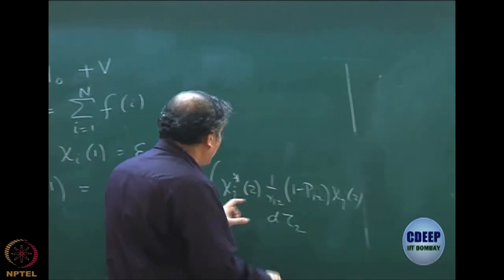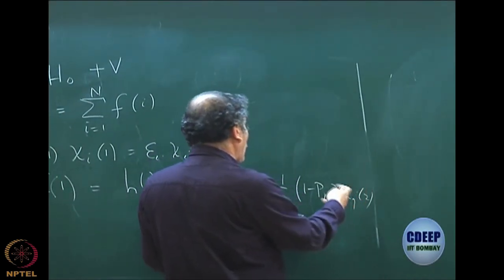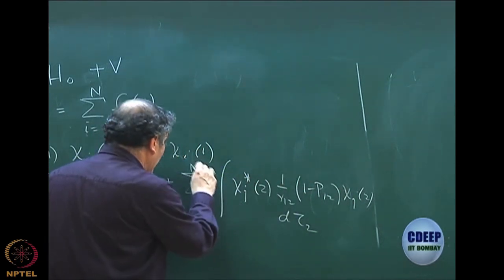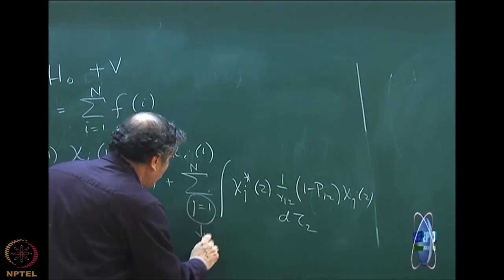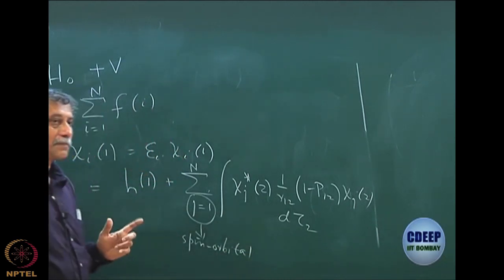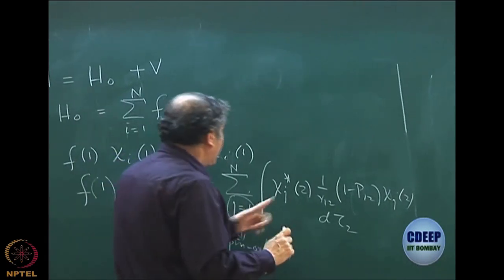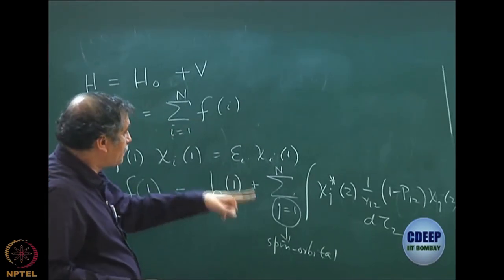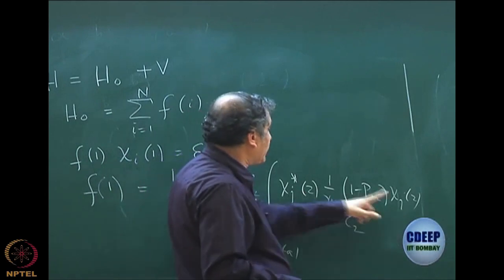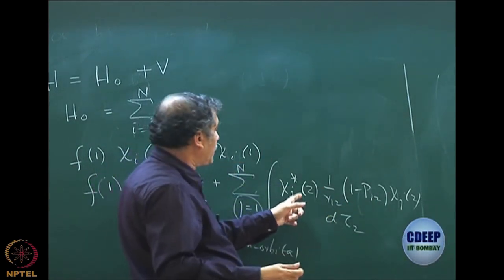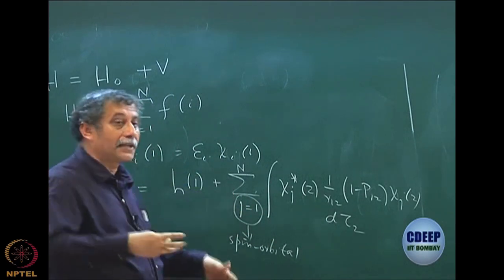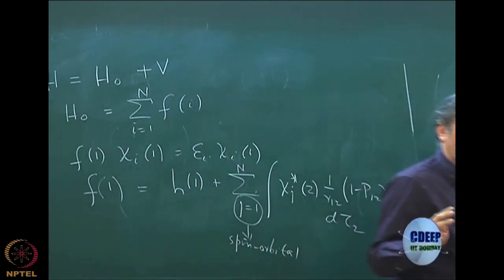This is an integration over only one electron coordinate, not both. Otherwise I will not get the Fock operator. When I go to the energy, I have a two-electron integral which brings in both i and j. But here χᵢ(1) is not inside the Fock operator definition — it will appear when the operator acts on it. The Fock operator definition only includes the one-electron coulomb and exchange part summed over spin orbitals.